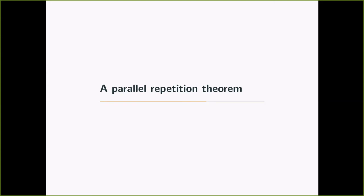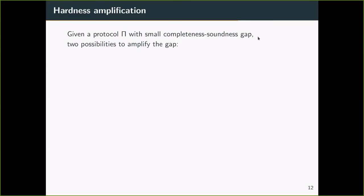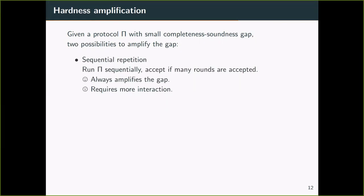Now we show that the soundness error can be improved by applying parallel repetition. Given a protocol with a small constant in the soundness gap, there are two possibilities to amplify the gap. One approach is by sequential repetition, which means that you run the protocol sequentially, and then you accept if many runs are accepted. What's nice about it is that it always amplifies the gap. The downside is that it requires more interaction.